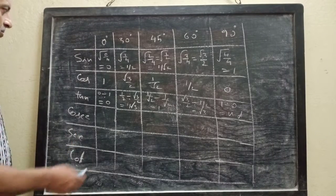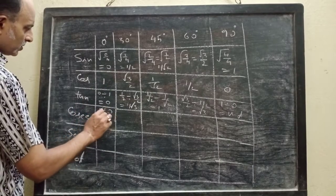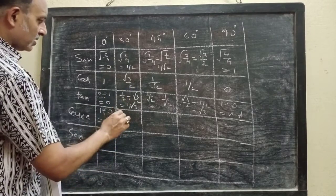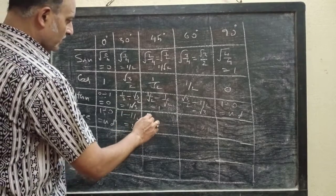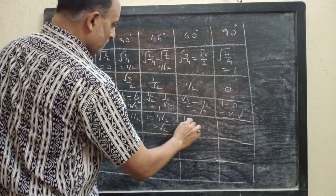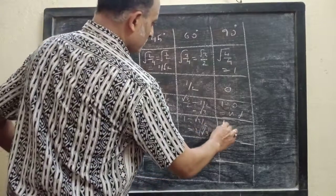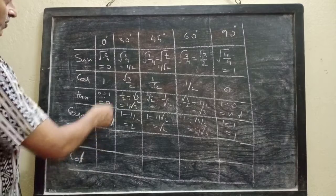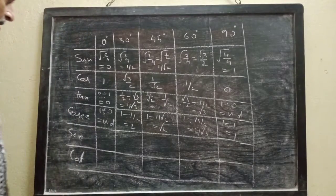Cosec is the reciprocal of sin. So cosec 0° = 1/0, which is undefined. Cosec 30° = 1 ÷ (1/2) = 2. Cosec 45° = 1 ÷ (1/√2) = √2. Cosec 60° = 1 ÷ (√3/2) = 2/√3. Cosec 90° = 1 ÷ 1 = 1. So: cosec 0° = undefined, cosec 30° = 2, cosec 45° = √2, cosec 60° = 2/√3, cosec 90° = 1.